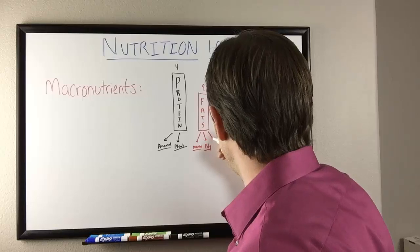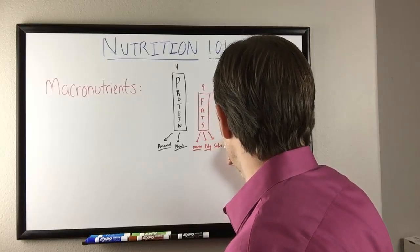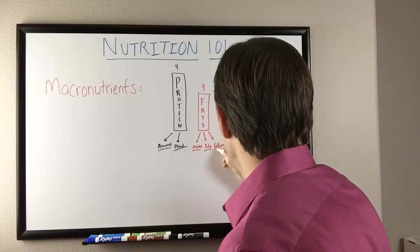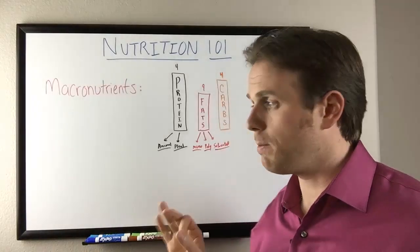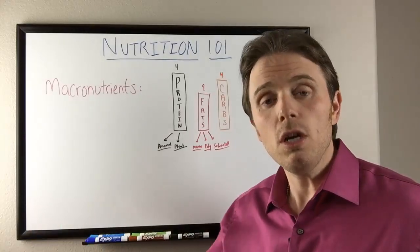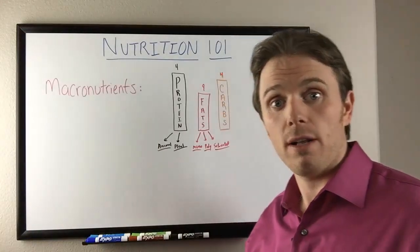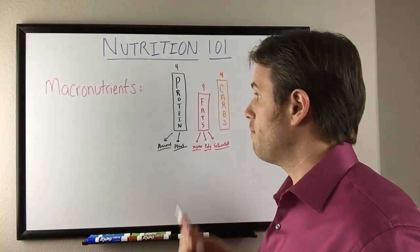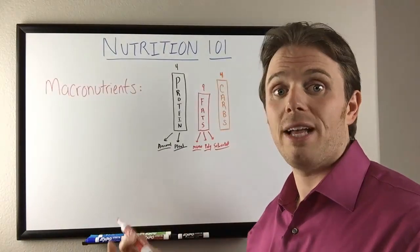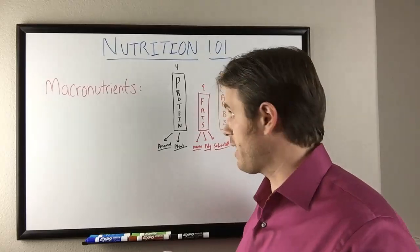And then we also have our saturated fats. And our saturated fats are going to be primarily animal sources, with the exception of coconut oil. Coconut's a saturated fat. We have butter in there. We're going to have a lot of the fat in beef, chicken, fish. There's going to be some saturated fat in there as well. Stearic acid as well.